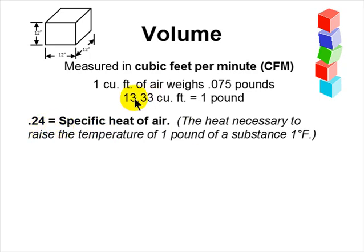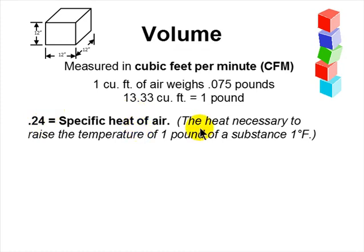Why is a pound of air important? Because we have to deal with the specific heat of this air if we're going to change its temperature. The specific heat of a substance is the heat necessary to raise the temperature of one pound of a substance one degree Fahrenheit. It takes a quarter of a BTU to raise the temperature of air one degree Fahrenheit. The specific heat of water is one — it's the definition of a BTU: the heat necessary to raise one pound of water one degree Fahrenheit at temperatures near freezing at sea level.